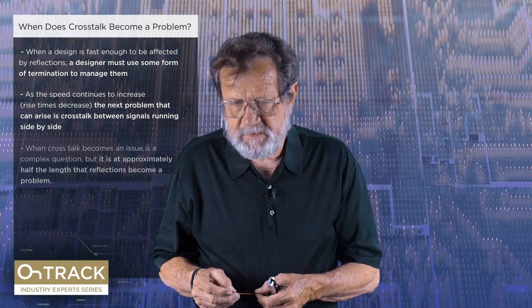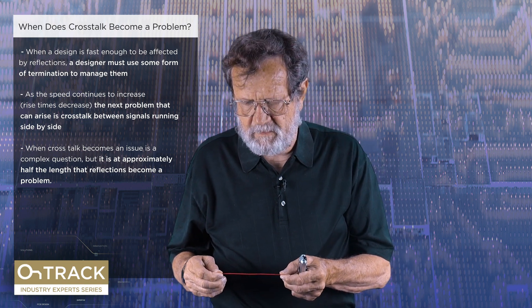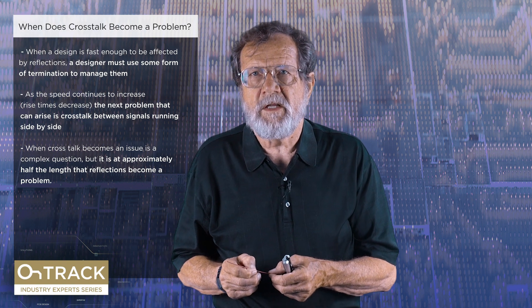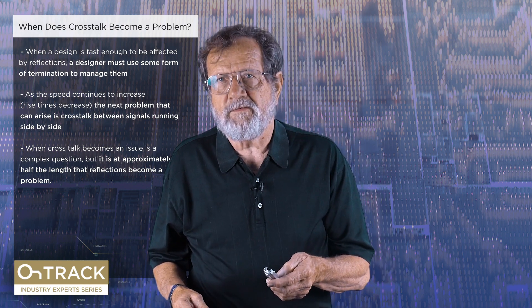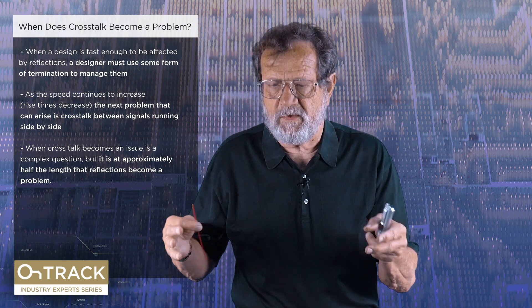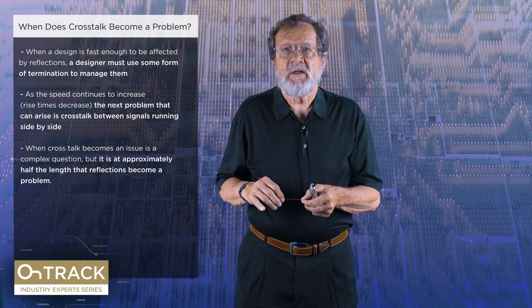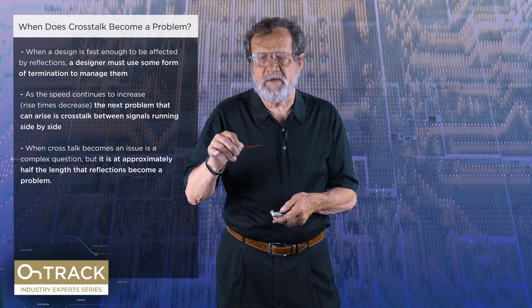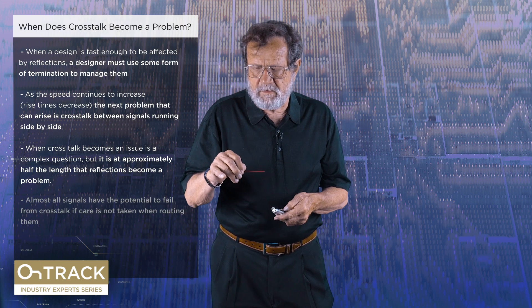Exactly when crosstalk is an issue is not a simple question to answer because it depends on a number of things. One of them is how long do the two traces run side by side. Another is how close are they to each other. A third is how much crosstalk can the circuit tolerate. That set of questions gets answered with an SI tool by sitting down and doing some analysis. Crosstalk hits its maximum at about half the parallel length where reflections become a problem — so about one-fourth of a rise time in length is where we have to start thinking about crosstalk.